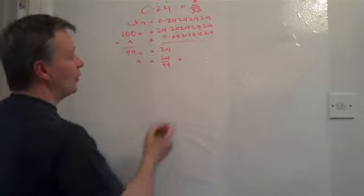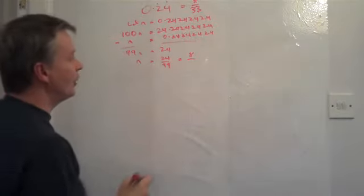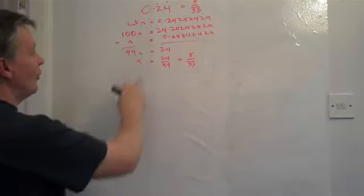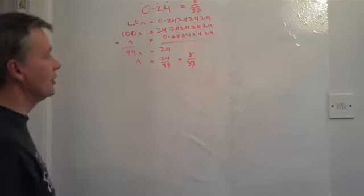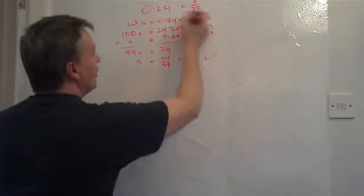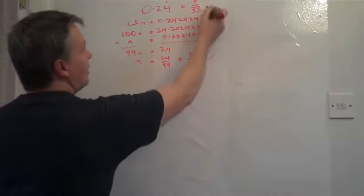So if I divide 24 by 3, that will give me 8. And if I divide 99 by 3, that would give me 33. So therefore, N equals the fraction 8 over 33. So I've proved that 0.24 recurring is exactly the same as 8 over 33.